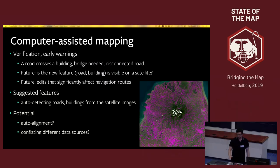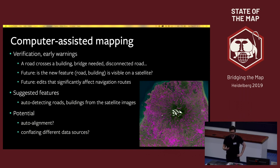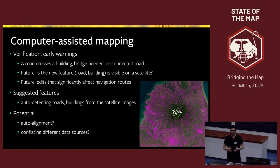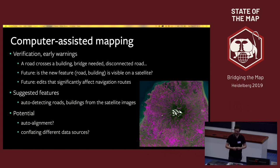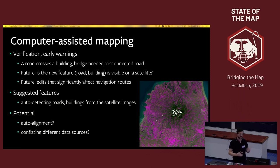Starting about 15 years ago, when satellite images came online and began to be used for mapping, there was a wide debate about privacy, precision, and how we ought to use these things. Today it's very different — we use them regularly and know their limitations, like alignment issues. Computer-assisted mapping feels like it's going through the same debate stage we saw with satellite imagery. Today we're talking about what mundane and repetitive tasks could be done by a machine to improve quality and simplify the process. For more complicated tasks, human attention and judgment is always required.